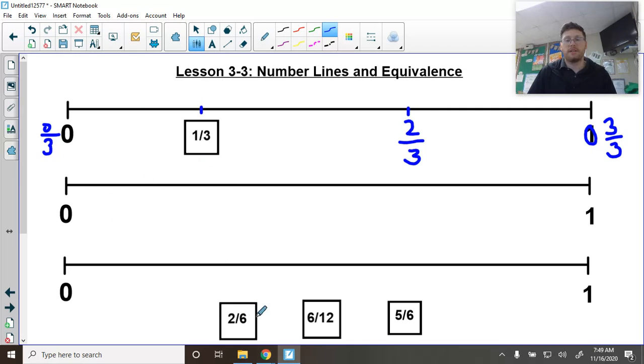OK. Now, the next one we're going to deal with. Let's do sixth. OK. So we'll go third. We'll go sixth. And then we'll go twelfths. All right. So this one needs to be broken into six equal pieces. Well, we already know that one whole equals six out of six.